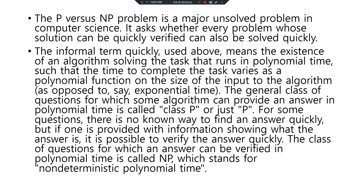PMP Problem Proof. The P vs NP problem is a major unsolved problem in computer science. It asks whether every problem whose solution can be quickly verified can also be solved quickly. The informal term 'quickly' means the existence of an algorithm solving the task that runs in polynomial time. The general class of questions for which some algorithm can provide an answer in polynomial time is called class P, or just P.